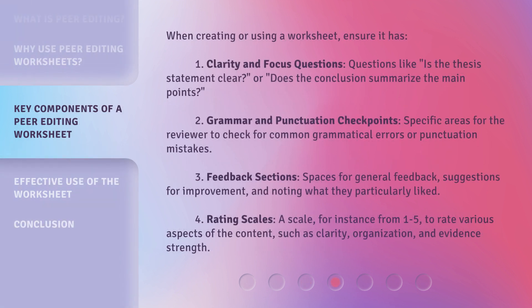When creating or using a worksheet, ensure it has four elements. First, clarity and focus questions — such as, is the thesis statement clear? or does the conclusion summarize the main points? Second, grammar and punctuation checkpoints — specific areas for the reviewer to check for common grammatical errors or punctuation mistakes. Third, feedback sections — spaces for general feedback, suggestions for improvement, and noting what they particularly liked. Fourth, rating scales — a scale, for instance from 1 to 5, to rate various aspects of the content such as clarity, organization, and evidence strength.